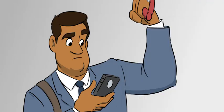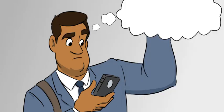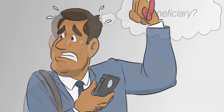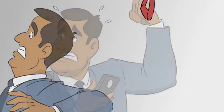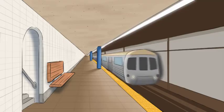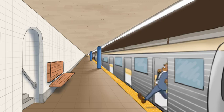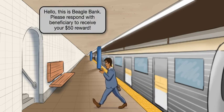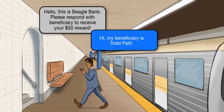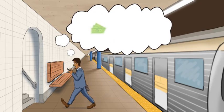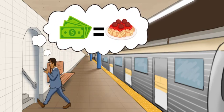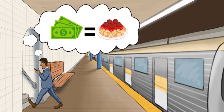This makes him a bit suspicious, and Tom thinks, why would I need to add a beneficiary? I don't think I've had one before. Oh no, I'm about to miss my stop. He jumps off the train and quickly responds to the text, reminding himself that $50 means he'll be able to treat himself to a very nice lunch tomorrow.